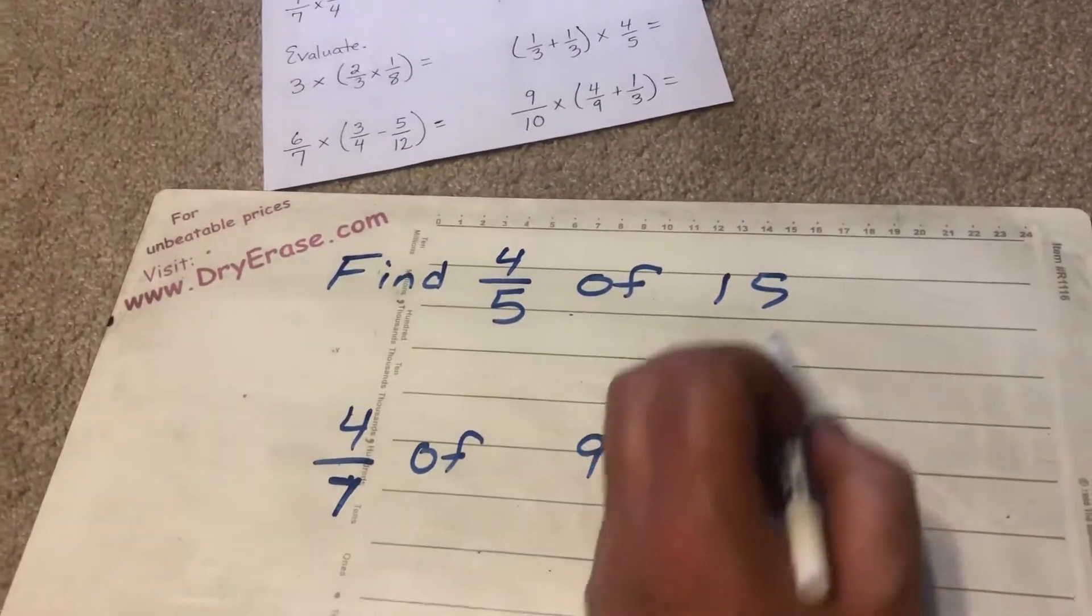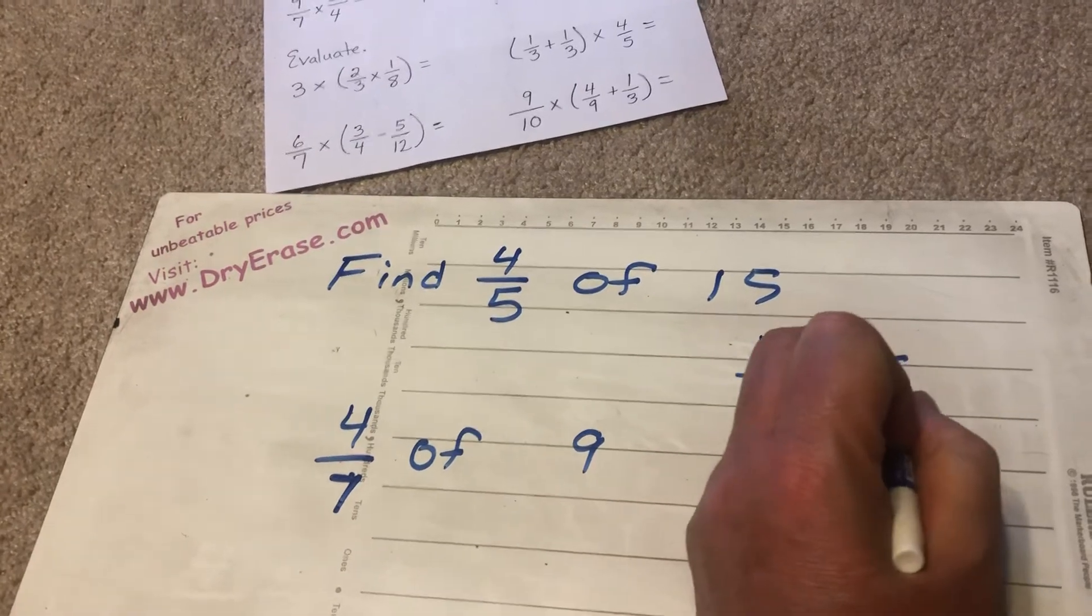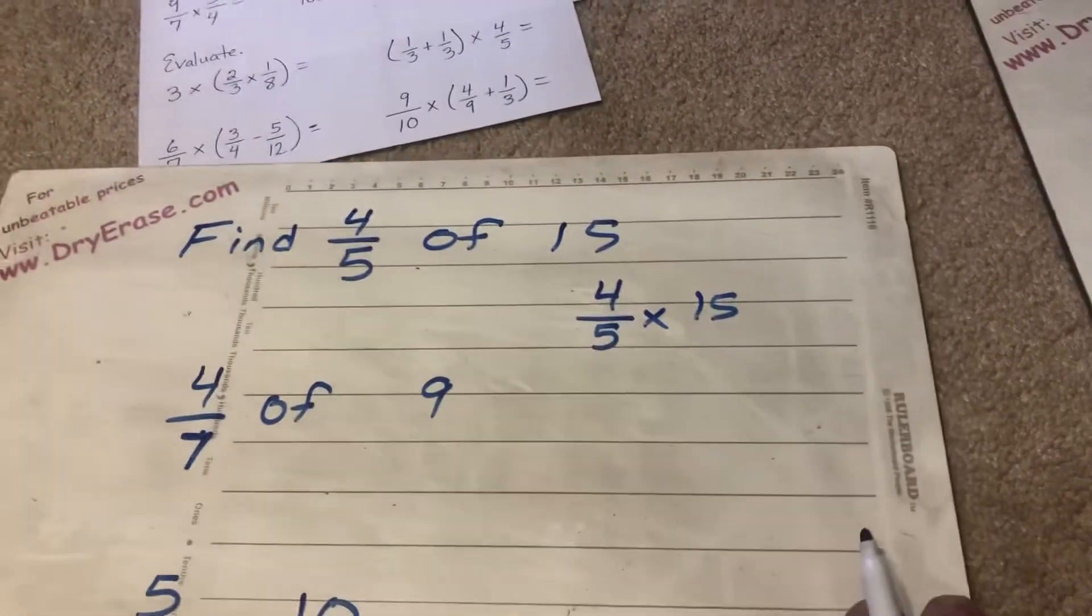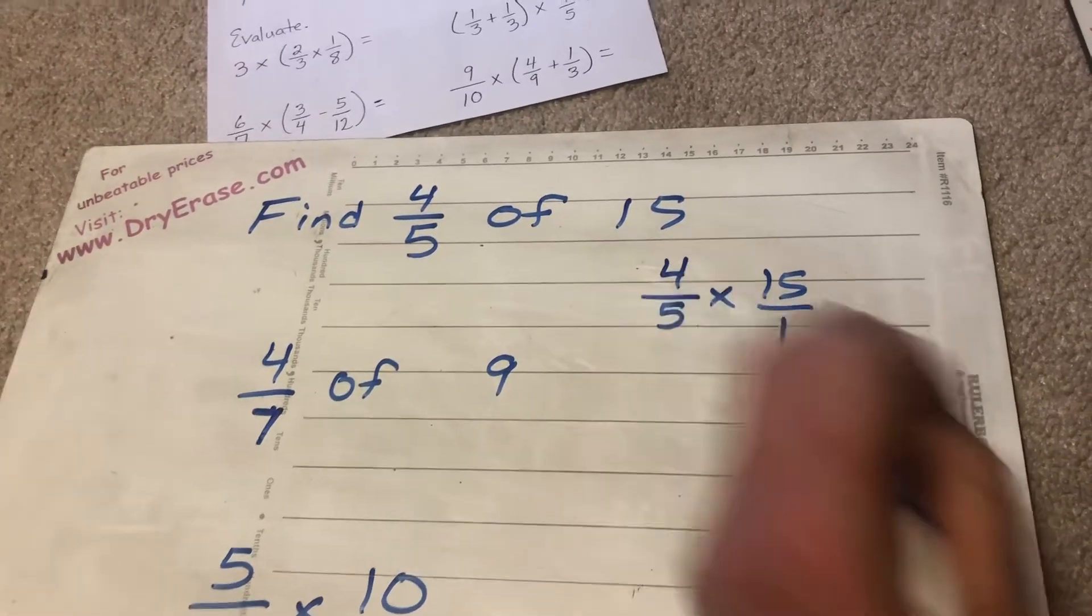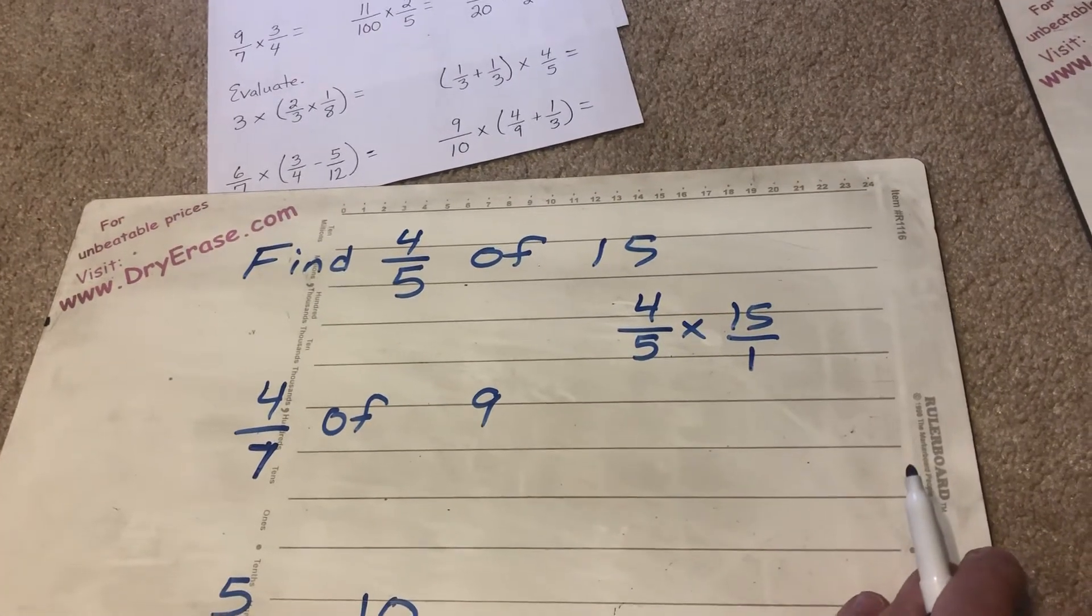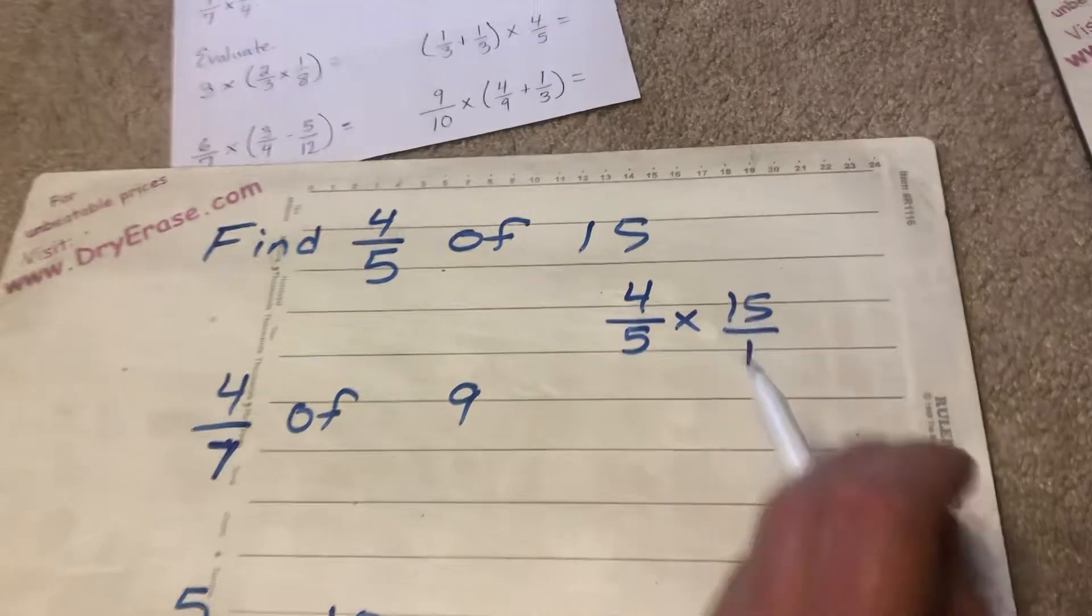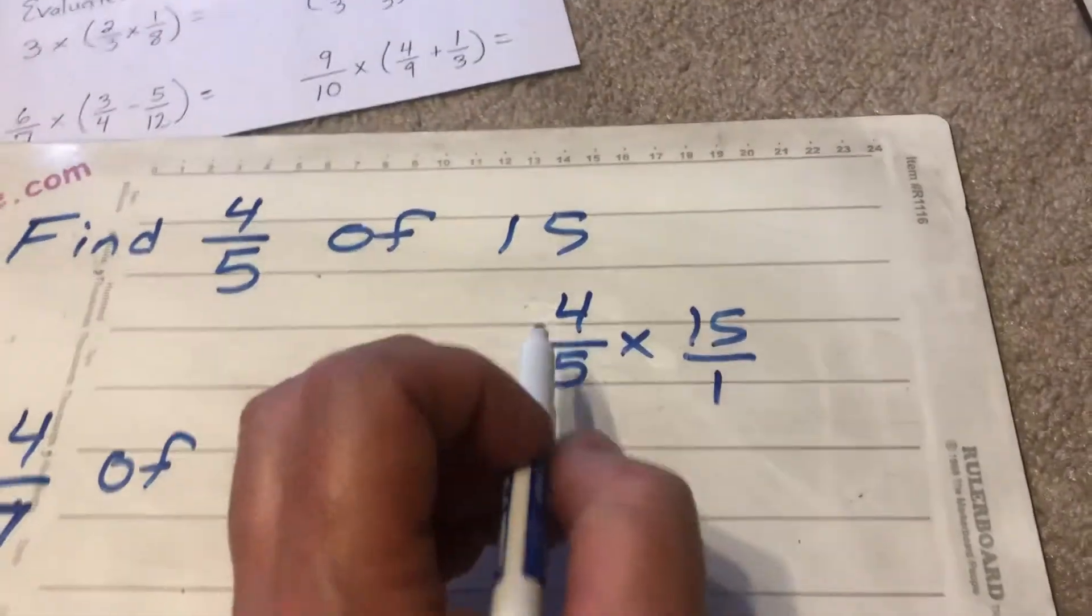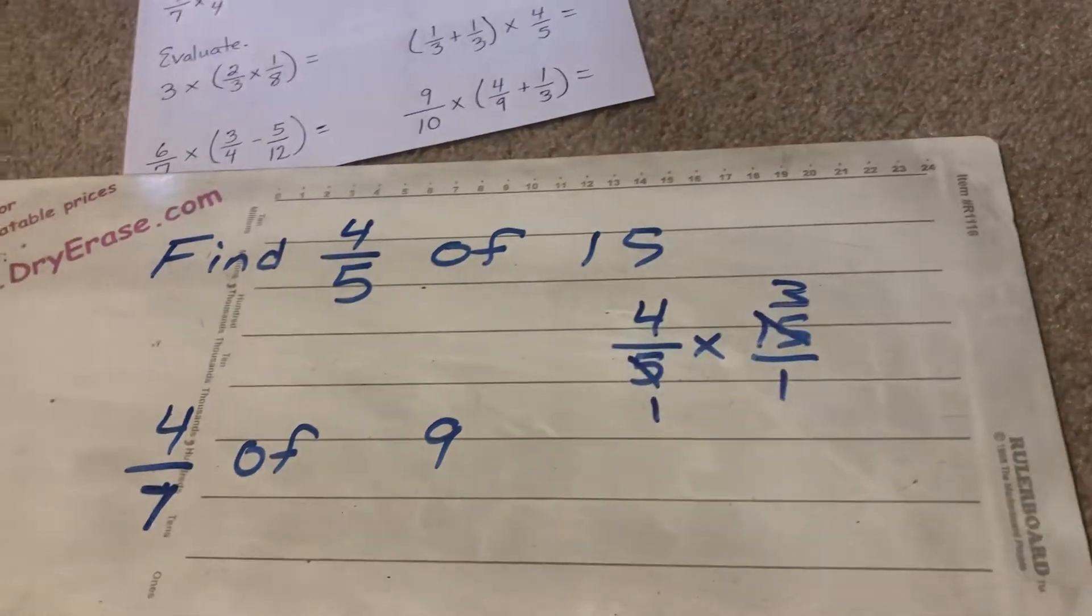Well all this is is the multiplication problem four-fifths times 15 and we find the same thing where once again we have to make everything a fraction. Remember step one is make everything a fraction. So my whole number 15 becomes 15 over 1. Okay, well with a 5 and a 15 I can cross-check because they're both divisible by 5. 5 divided by 5 is 1. 15 divided by 5 is 3.